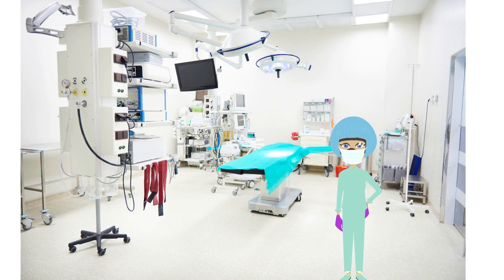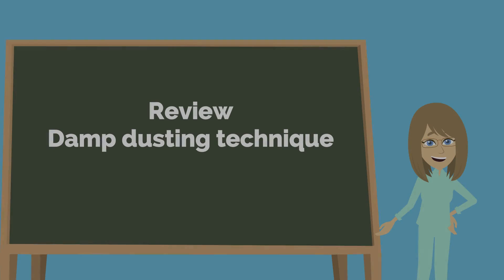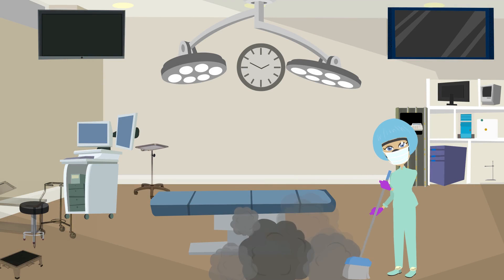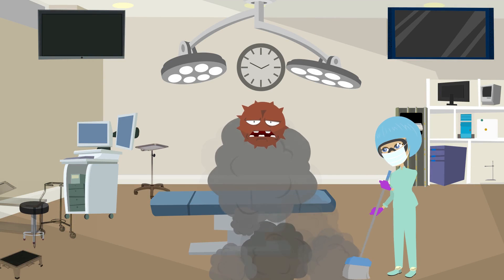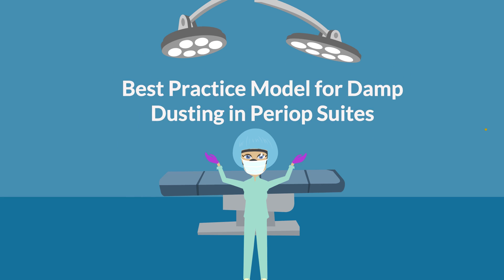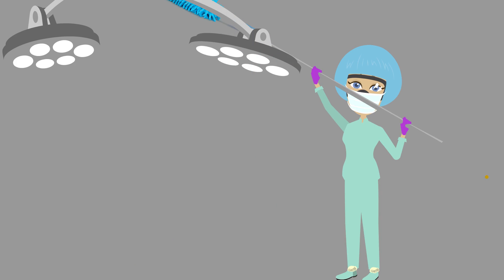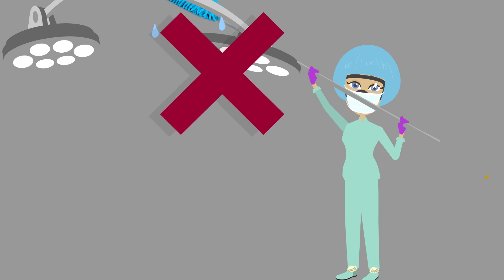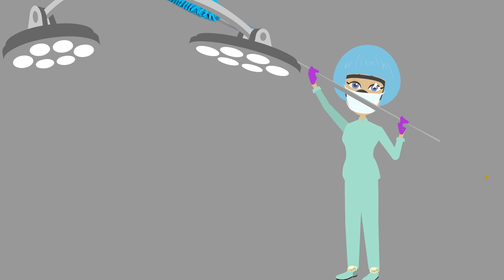Damp dusting is essential to maintaining a clean environment and reducing the risk of HAIs. Never dry sweep, dry dust, or perform any dust-generating procedures in perioperative areas, as these actions stir up dust particles which can ride air currents and spread germs. To perform damp dusting: dampen a microfiber high-reach dusting sock or microfiber cloth with disinfectant, wring out the cloth until it is damp but not wet, place it onto or wrap it around a high-reach tool, spot clean the ceiling as needed, then perform the high-dusting process. Wear appropriate PPE to prevent chemical exposure from splashing.